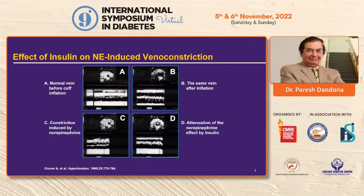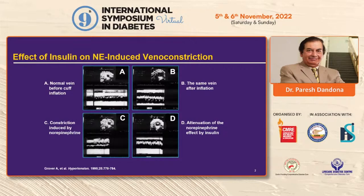If you increase blood pressure with a cuff on the arm, in panel B the vein dilates. Then if you infuse norepinephrine, in panel C it vasoconstricts, and when you co-infuse with insulin the vein dilates — this occurs within seconds to minutes. This was the first evidence that the vasodilatory effect of insulin is a direct one on the blood vessel itself. The first author was Anil Grover, who was working with me as a fellow and ended up as chief of cardiology at PGI Chandigarh.